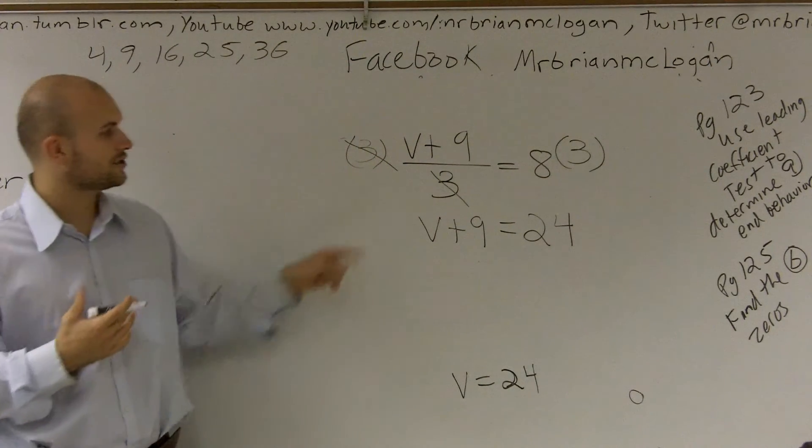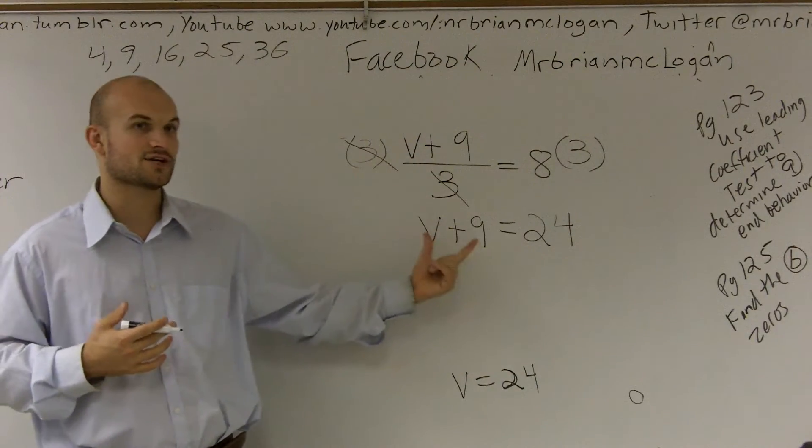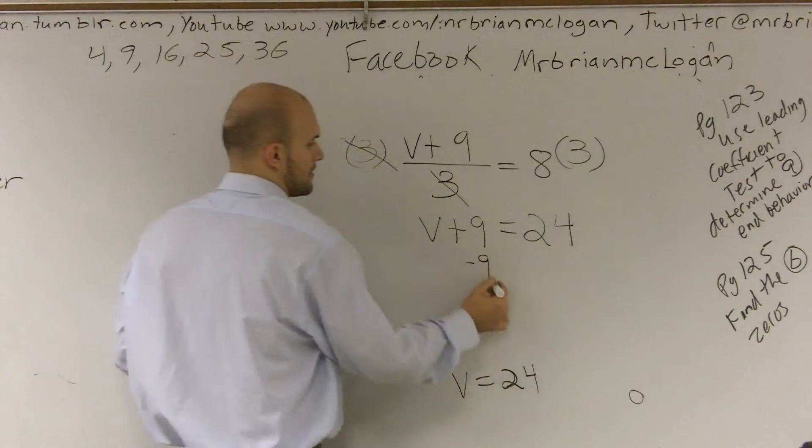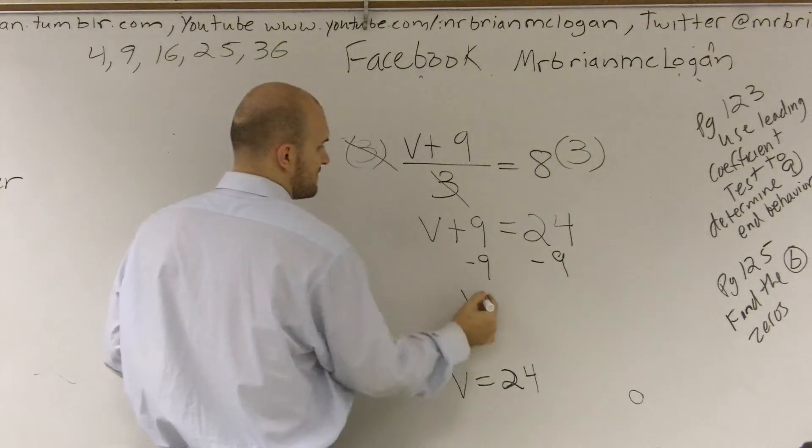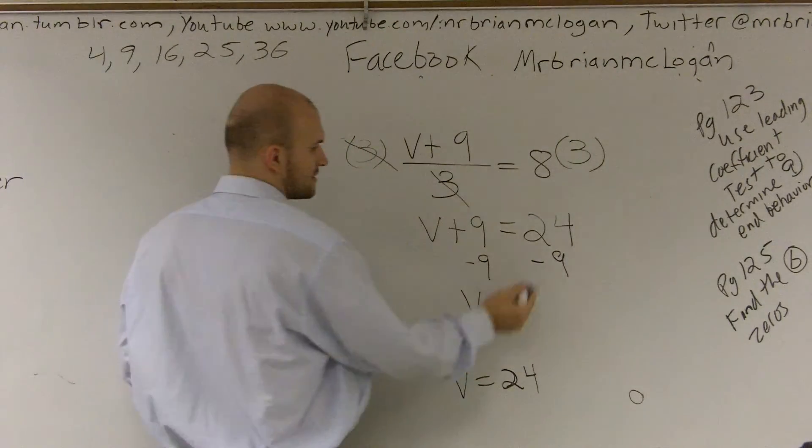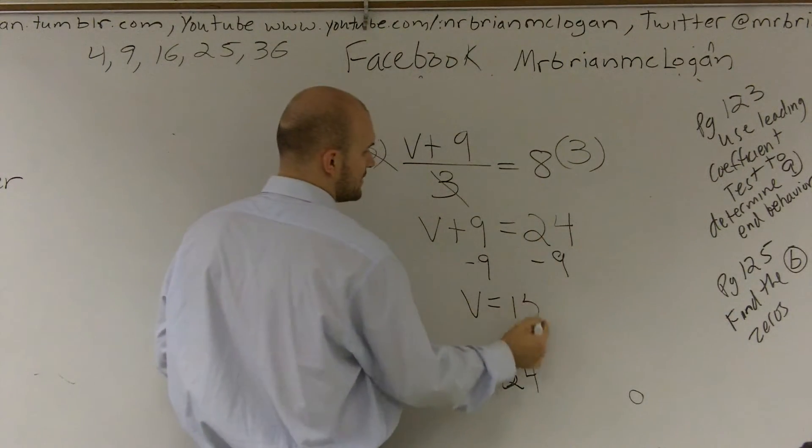Then the last thing I need to do is now I can undo what's happening to my variable, which would be to subtract 9. So therefore I have v equals, and it's not going to be 24 minus 9, which would be 15. So my final answer actually is 15.